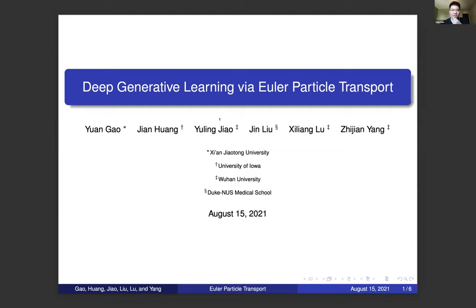Hello everyone. Today I would like to introduce our recent work on deep generative learning with tools from optimal transport. We named our work 'Deep Generative Learning via Euler Particle Transport.' This is joint work with Professor Jian Huang from the University of Iowa, Professor Yu-Ling Joe, Professor Shi-Liang Li, Professor Yanzi Jian from Wuhan University, and Professor Jing Liu from Duke–NUS Medical School.